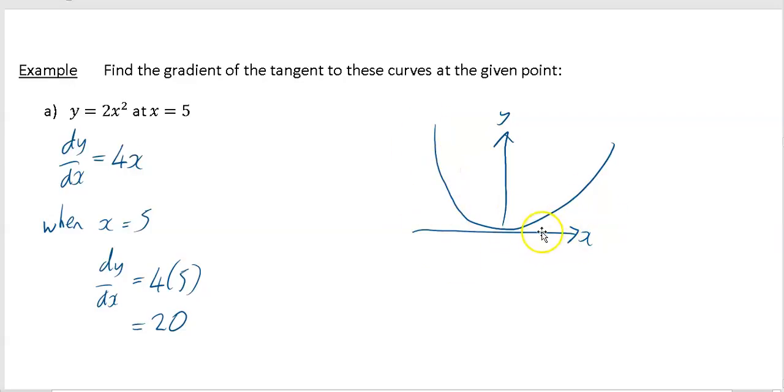And anywhere on this side, so when the x values are positive, the gradient is positive as well. So if you imagine, say this was x equals 5, if I did this tangent at that point, that line would have a gradient equal to 20.